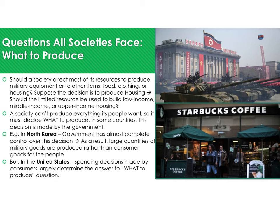In some countries, the government decides what to produce — in North Korea, the government has almost complete control, resulting in large quantities of military goods rather than consumer goods. But in the United States, spending decisions made by consumers largely determine the answer to the 'what to produce' question through the concept of supply and demand.